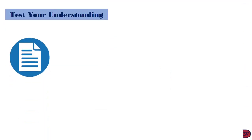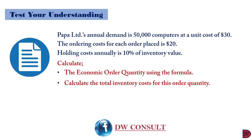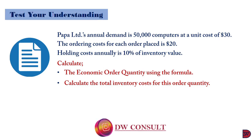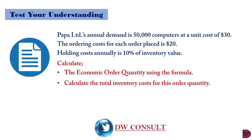When we test our understanding, we have Papa Limited again, whose annual demand is 50,000 computers at a unit cost of $30. The ordering cost for each order placed is $20. Holding cost annually is 10% of the inventory value. We are now to calculate the economic order quantity using the formula, and then calculate the total inventory cost for this order quantity.